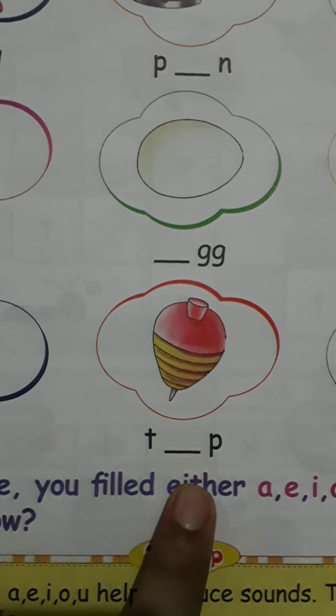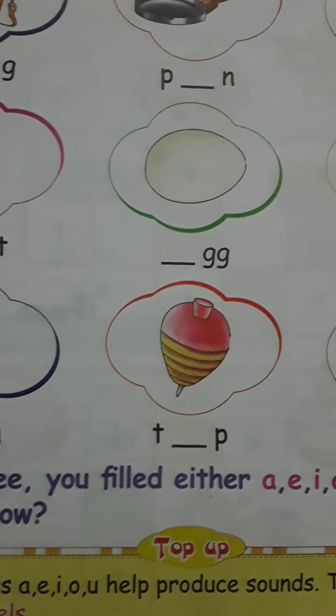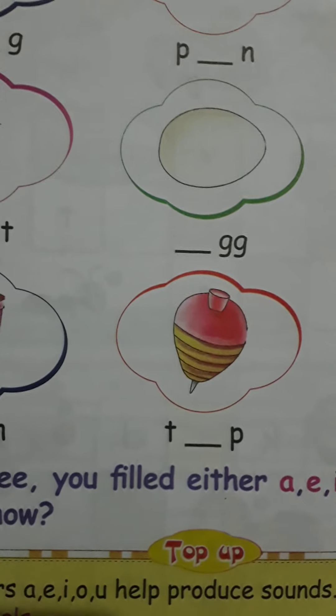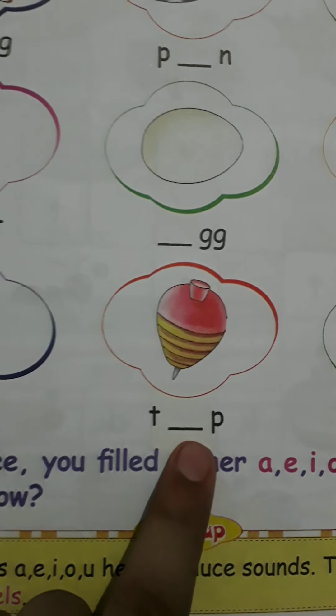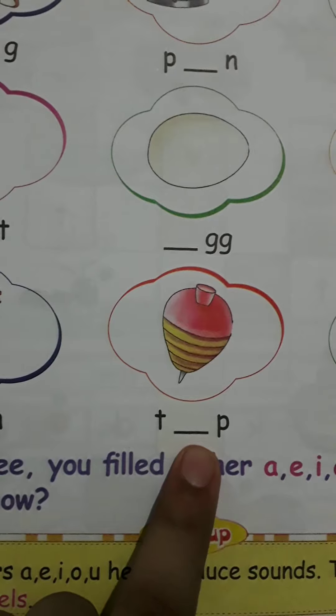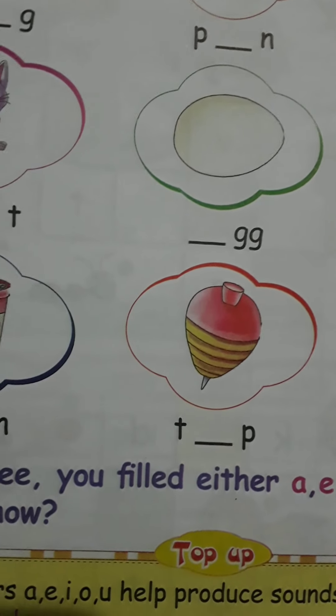Next, we will see that this is a top — a spinning top. And here, what is missing? O. So if we put O, it becomes T-O-P — top. Very good.